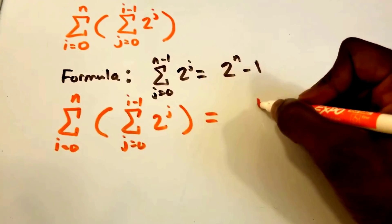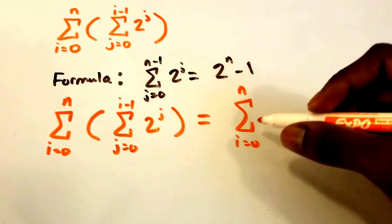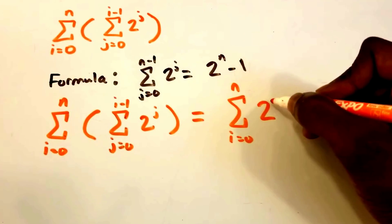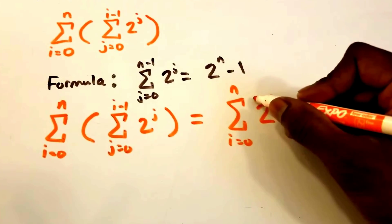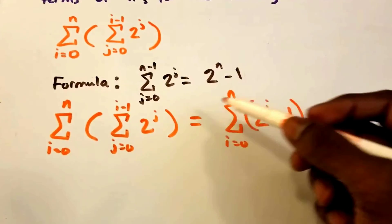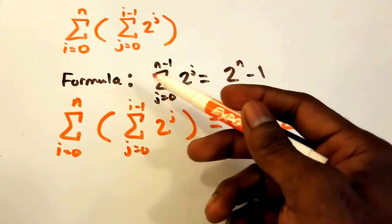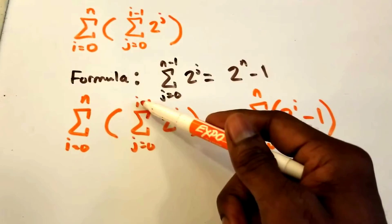Now this is equal to the summation from i equals 0 to n of 2 to the power of i minus 1. Where'd I get this from? Well, we're just using this formula, and I'm just replacing the n in the formula with i.